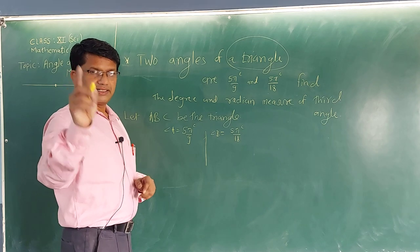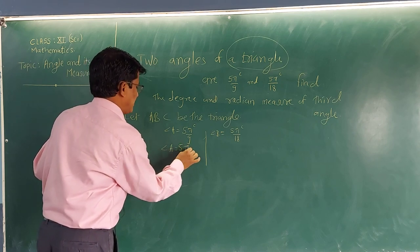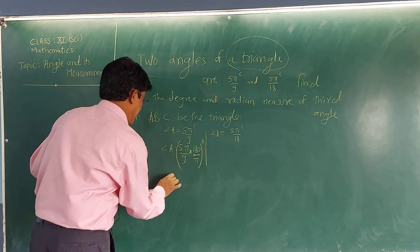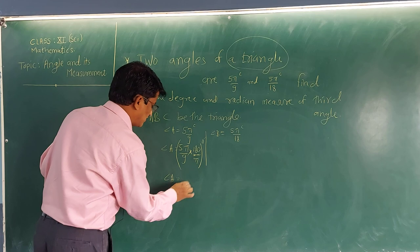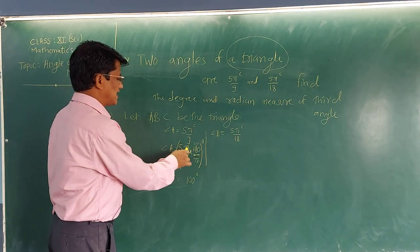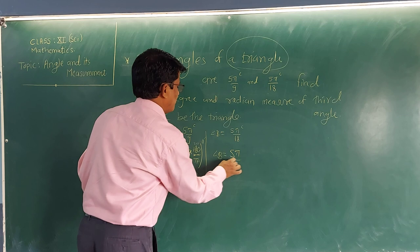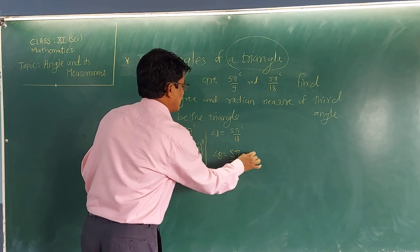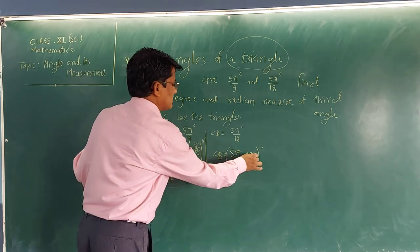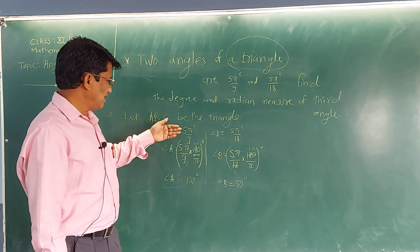Angle A equals π/9 radian. Multiply by 180/π to convert to degrees. The π cancels: 180/9 gives angle A equal to 100 degrees. Similarly, angle B equals π/18 radian multiplied by 180/π. The π cancels: 180/18 gives angle B equal to 50 degrees.